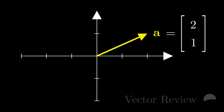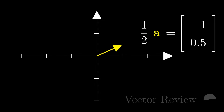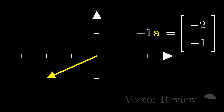We can multiply vectors by numbers, which will change their length but not their direction. So multiplying by one half, for example, will make the vector half as long. We can multiply by negative numbers too, which makes the vector point the opposite way. Since it's scaling the length of the vector, this number we multiply by gets called a scalar.